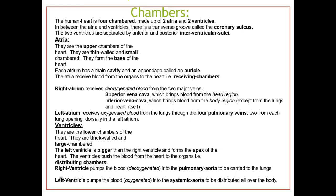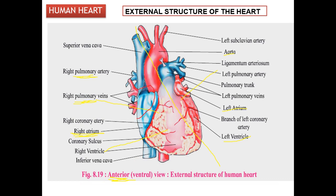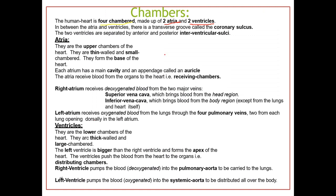The human heart has four chambers — it is four-chambered. There are two atria and two ventricles. The atria are the upper chambers. The left atrium and right atrium are the upper thin-walled small chambers which form the base of the heart.